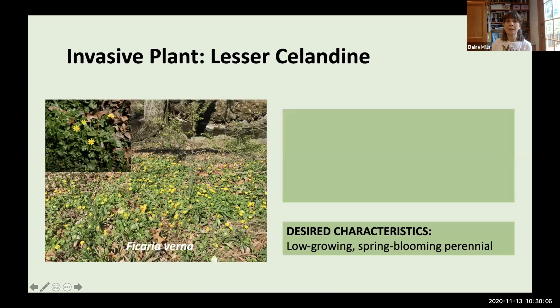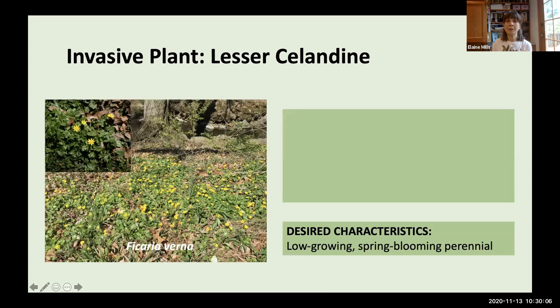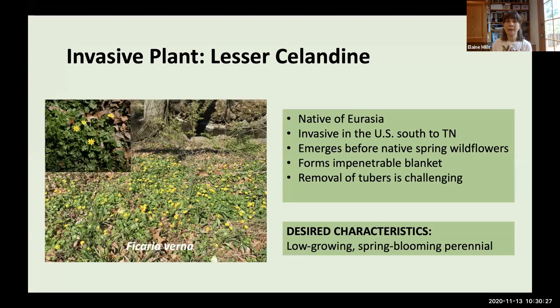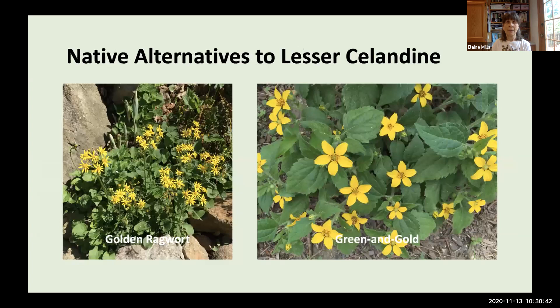Another invasive plant in our region is Lesser Celandine, native to Eurasia and now invasive in a good part of the United States south to Tennessee. It emerges very early before our native spring wildflowers, spreads to form impenetrable blankets, and removal of the tubers is challenging. Unfortunately, it's still commercially available. For low-growing, spring-blooming perennials with yellow flowers, I suggest Golden Ragwort and Green and Gold.